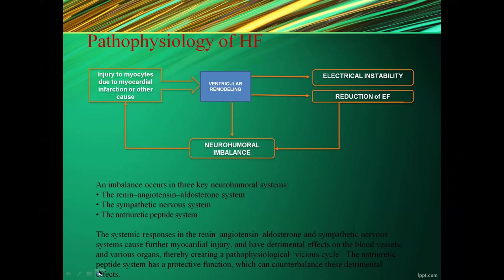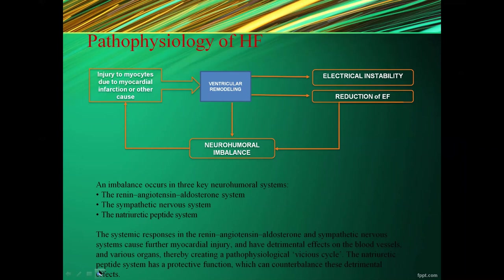Injury to myocytes due to myocardial infarction or other causes leads to ventricular remodeling, which causes electrical instability and reduction of ejection fraction. It also activates neurohumoral imbalance, starting the vicious cycle of heart failure. The imbalance occurs in three key neurohumoral systems: the RAAS system, the sympathetic nervous system, and the natriuretic peptide system. The renin-angiotensin and sympathetic systems cause further myocardial injury, while the natriuretic peptide system has a protective function that can counterbalance these detrimental effects.